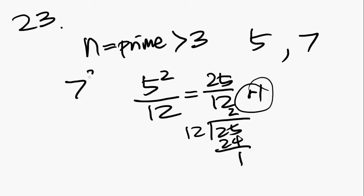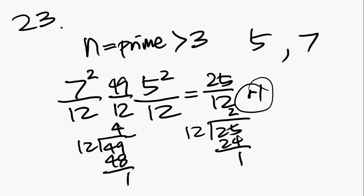Let's try it out with 7. 7 squared divided by 12, that would be 49 divided by 12. If you multiply 12 by 4, you get 48. Again, remainder 1. So remainder 1 appears to be the answer, and that is B.